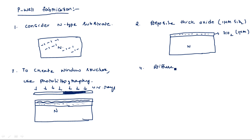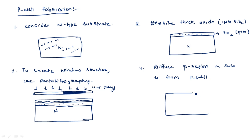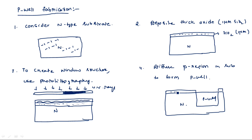Here we are creating the P-well. We diffuse P-type impurities into the N-type substrate to form the P-well. After diffusing, the P-well is created on the N-type substrate.